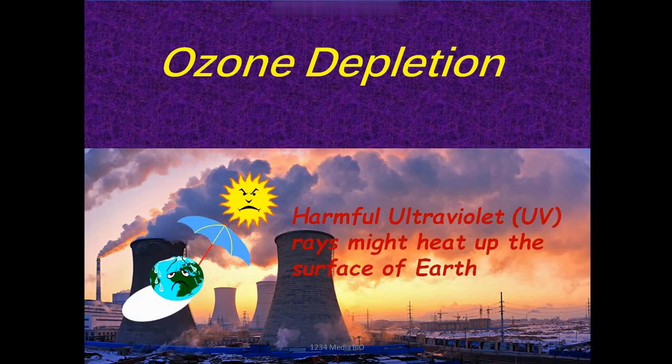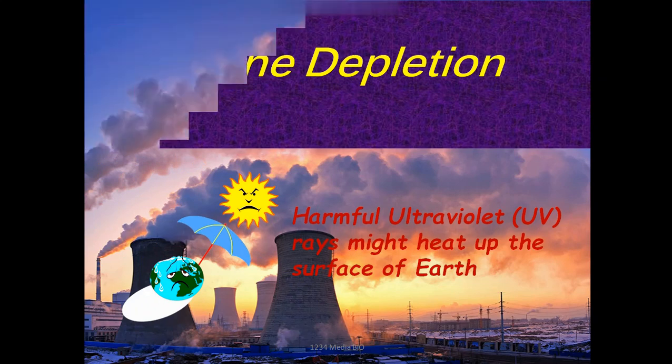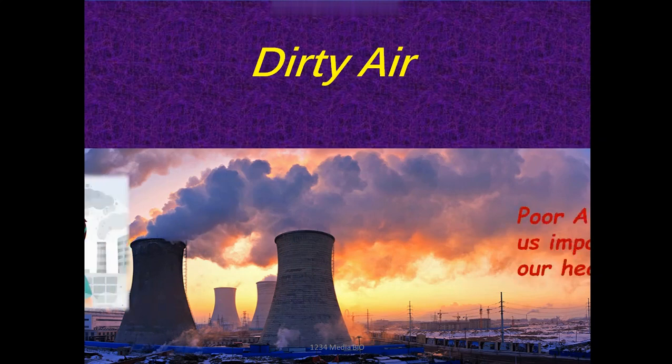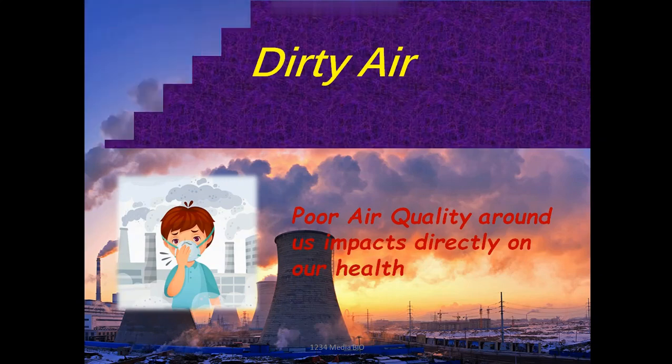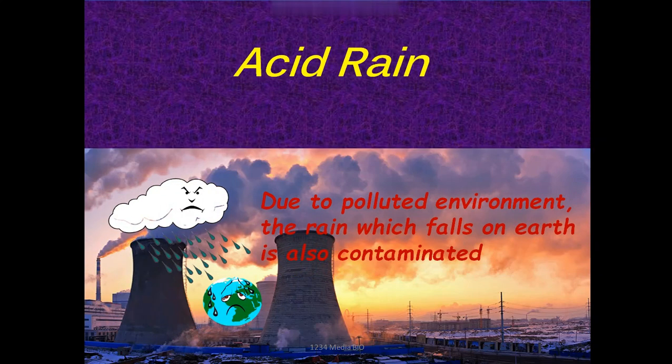Next, ozone depletion — you might have heard about the ozone layer of the atmosphere. Due to pollution, this layer gets thin and harmful ultraviolet UV rays might heat up the surface of Earth. We have an entire video named 'Global Warming' which discusses this specific thing in detail.